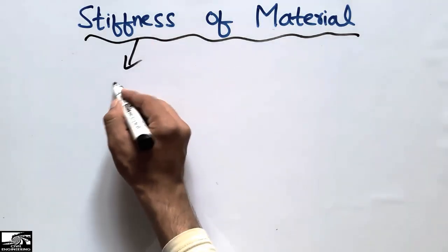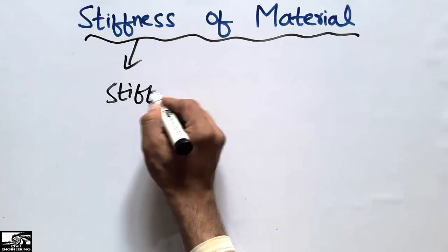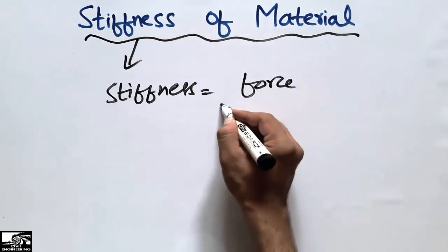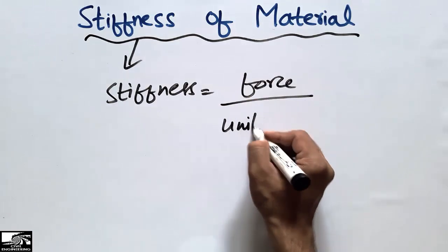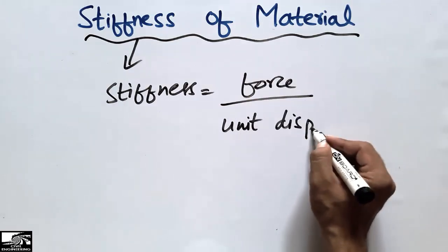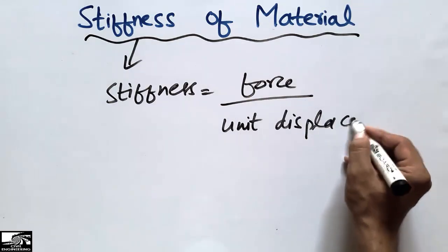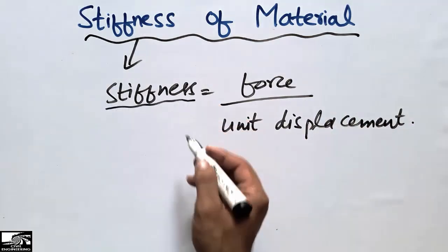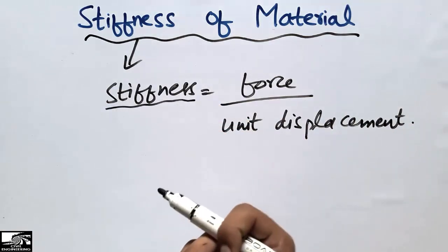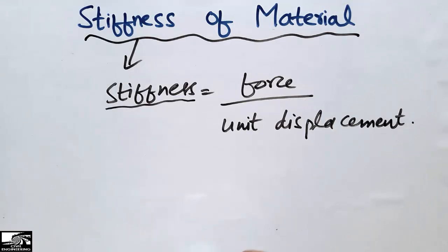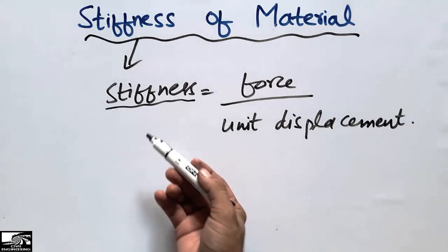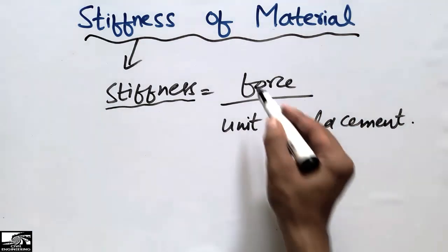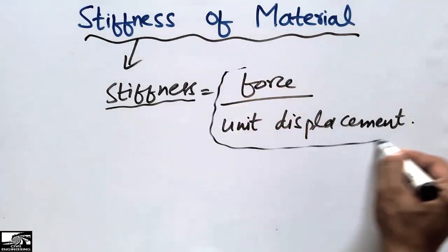First, to define stiffness: stiffness can be defined as the ratio of force to unit displacement. We can also define stiffness as the ability of resistance to deflection. This property of a material is called stiffness.